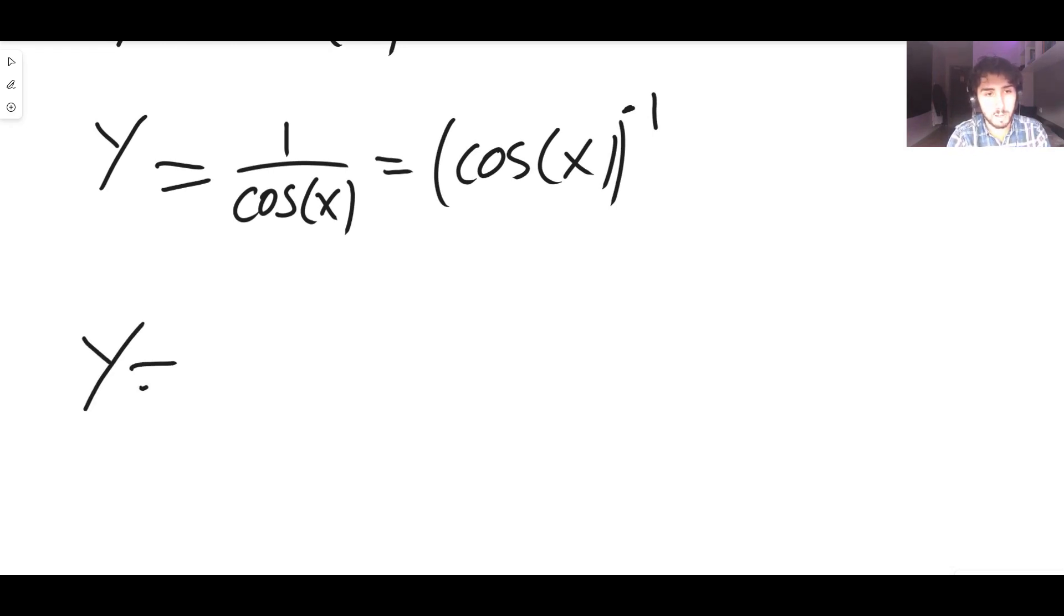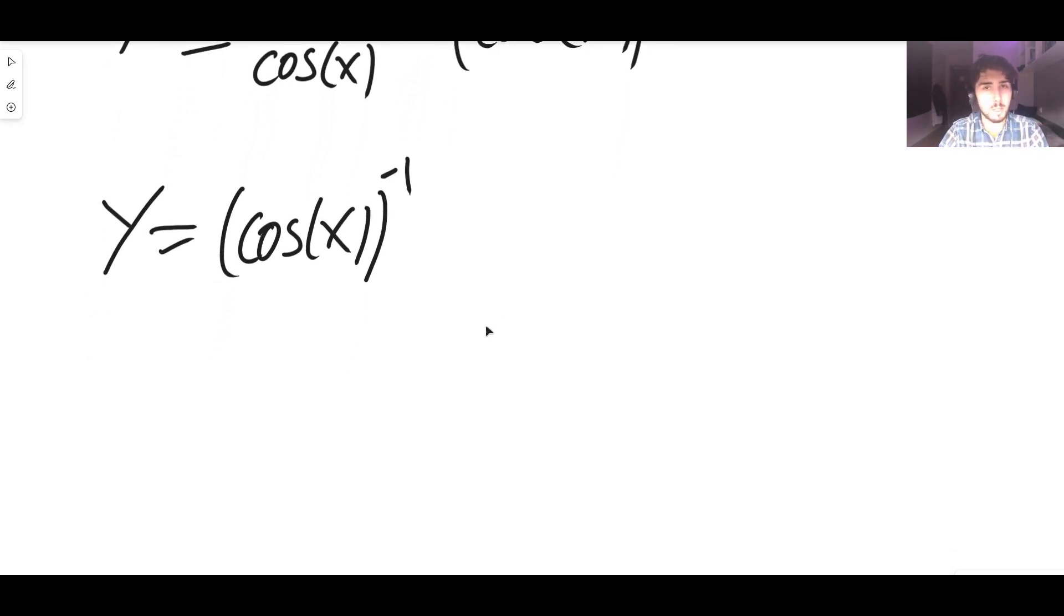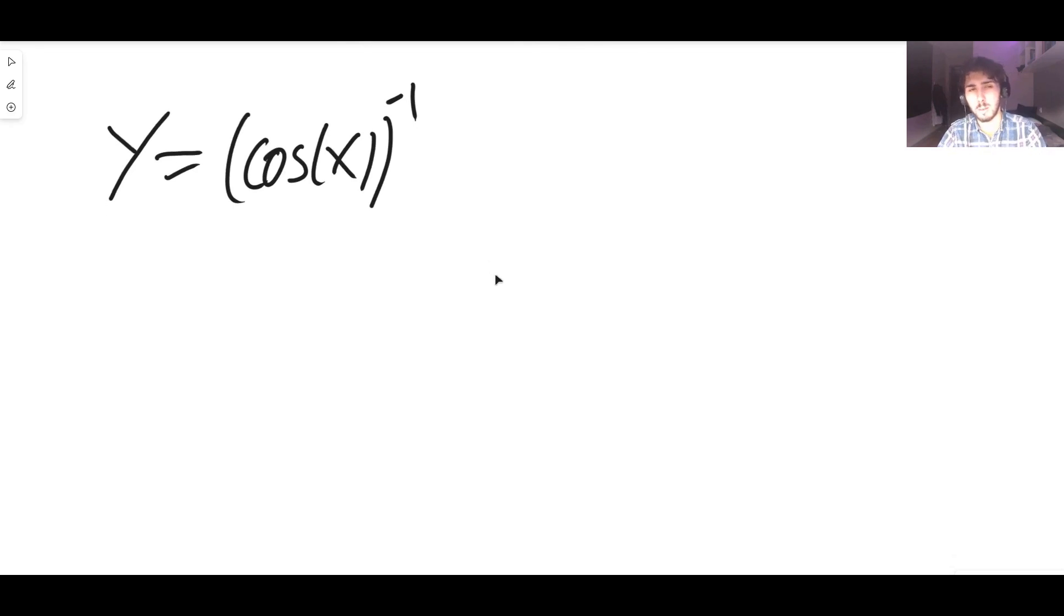So I'll just rewrite this one more time. So y is equal to cos x to the power of minus one. You may use the quotient rule if you want to as well. You could use the quotient rule with one and cos but I think this is faster because one is just a number so no need for the quotient rule.